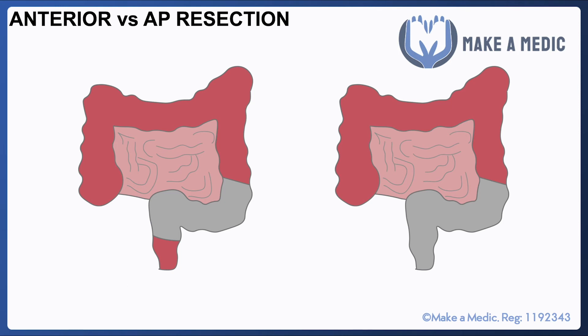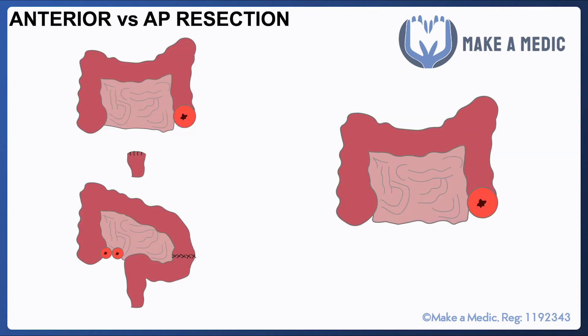One caveat is that in some cases a low anterior resection may be performed, where the distal margin of the resection is brought down a little bit so a small amount of rectum is still preserved, allowing a mid-level rectal tumor to be removed. Following an anterior resection, which spares the lower part of the rectum, patients may end up with an end colostomy, or they may potentially be able to have a primary anastomosis. However, they may also require a defunctioning loop ileostomy, which will be discussed shortly.